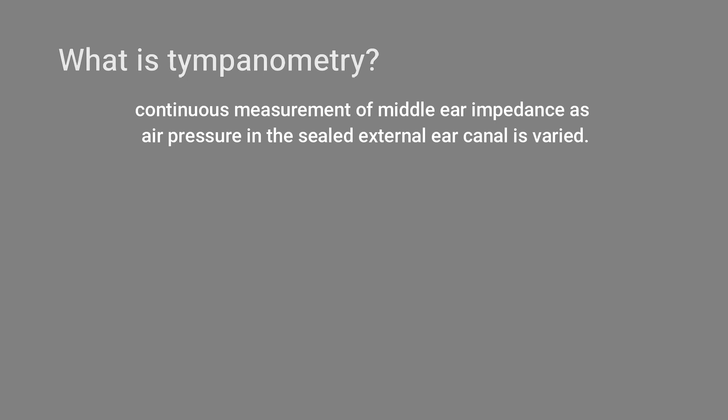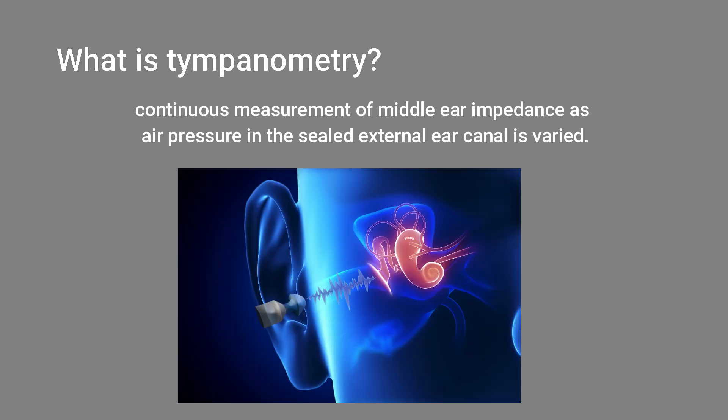Tympanometry is the continuous measurement of middle ear impedance or middle ear pressure as the air pressure in the sealed external air canal is varied. First we seal the external auditory canal, then this probe changes the pressure in the external auditory canal, and during the change of pressure it also measures the impedance or pressure of the middle ear.